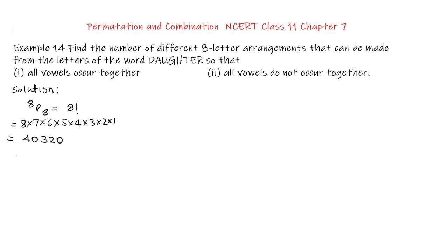The vowels in the word DAUGHTER are A, U, and E - 3. So there are 3 vowels and 5 other letters. If we take vowels as one group and including 5 other letters, there are 6 groups or 6 letters we can treat it.